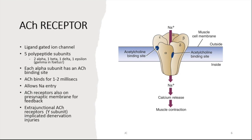The acetylcholine receptor is a ligand-gated ion channel with five polypeptide subunits: two alphas, a beta, an epsilon, and a delta. The epsilon is replaced with a gamma subunit in the fetus — similar to fetal hemoglobin with its two alpha and two gamma chains. Each alpha subunit has an acetylcholine binding site, so two acetylcholine molecules must bind per receptor for it to open. It binds for a very short time — just one to two milliseconds — and when open, allows sodium entry, causing depolarization and signal transmission into the muscle.